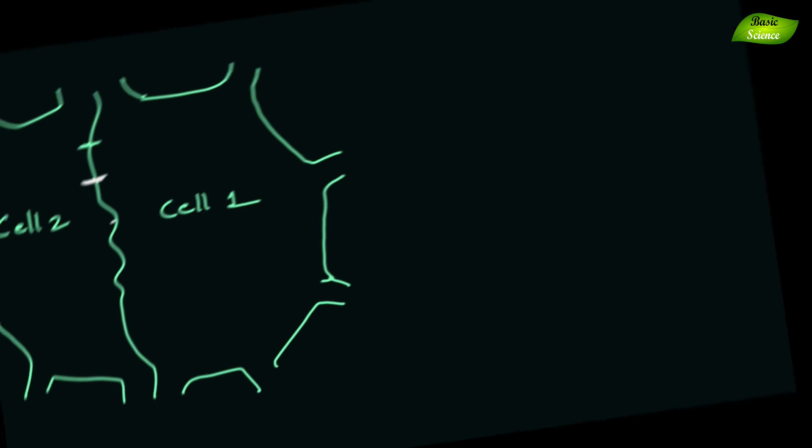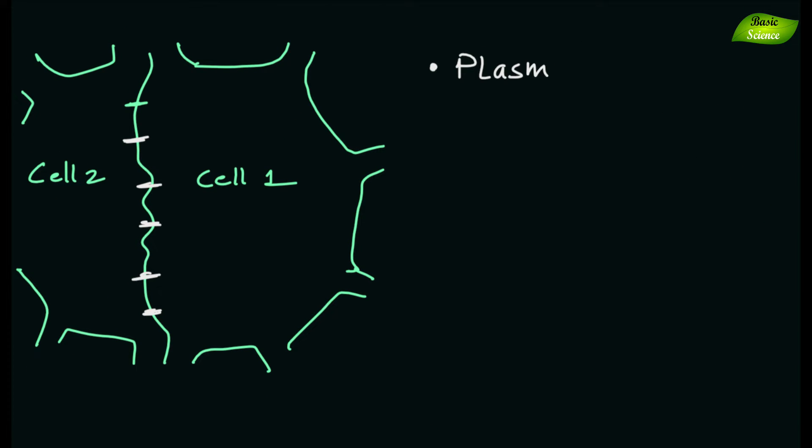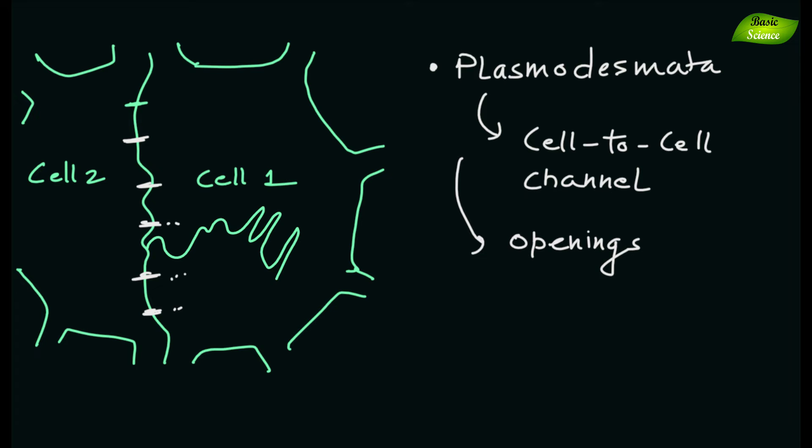Next is the plasmodesmata. These are exclusive cell-to-cell communication channels that take the form of openings in the primary cell membrane, through which the plasmalemma and endoplasmic reticulum of neighboring cells are continuous.